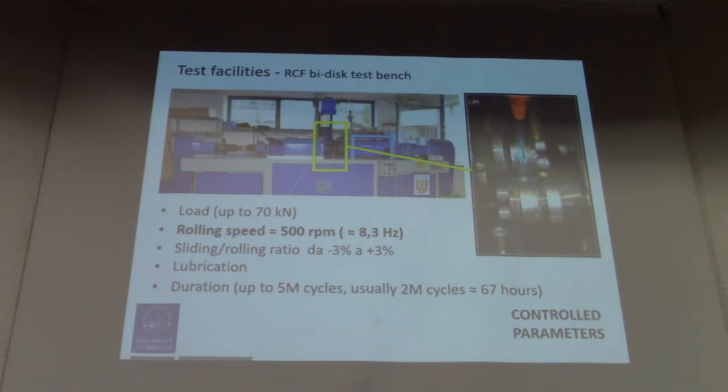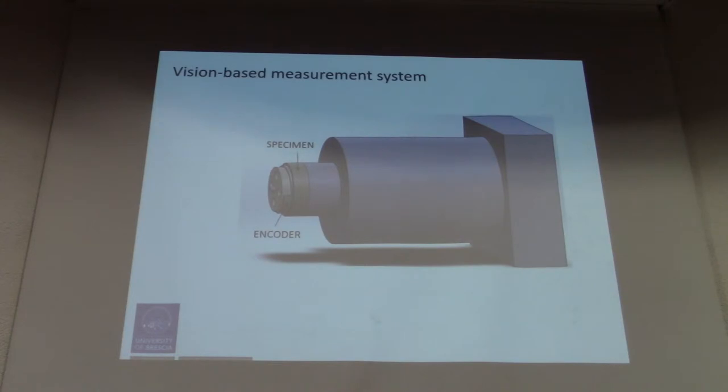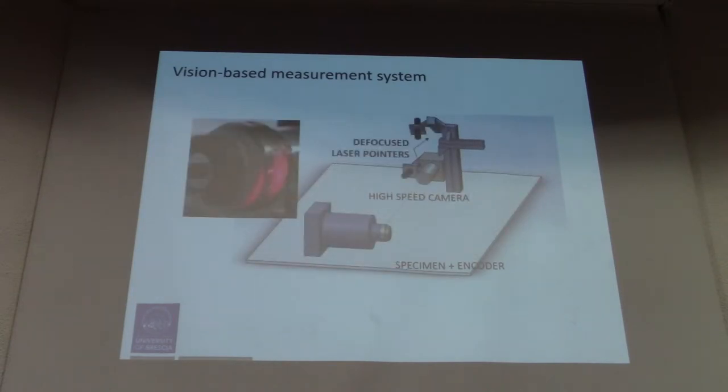On this test bench we mounted a vision-based measurement system. We mount the specimen in an annulus with a linear profile which is needed to know the angular position of the specimen which is rolling. And then we acquire an image of a portion of surface of the specimen with a high-speed camera, so the measurements are online, and then illuminate the specimen with diffused laser pointers in order to obtain a homogeneously illuminated surface.